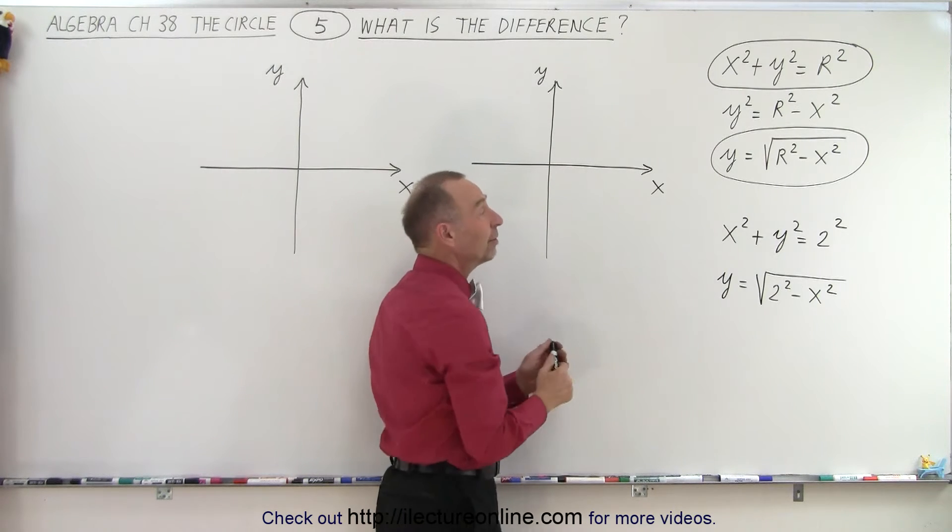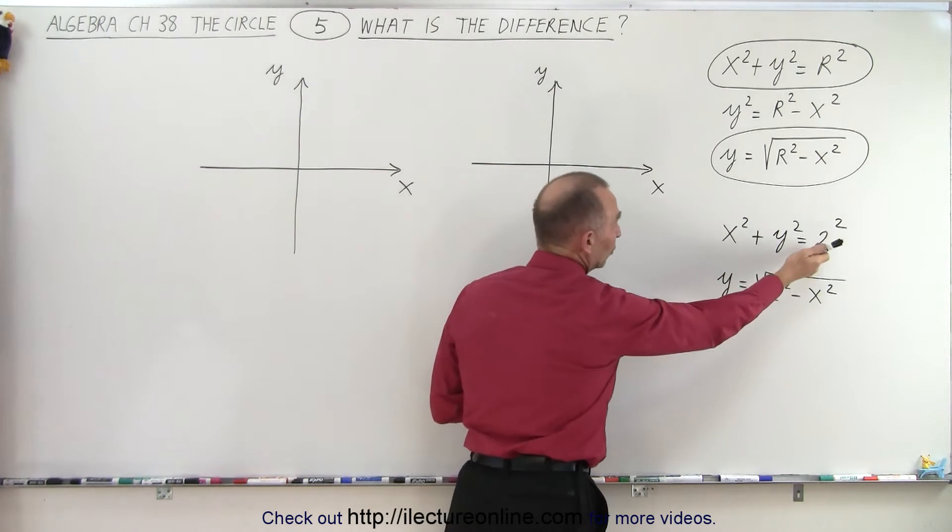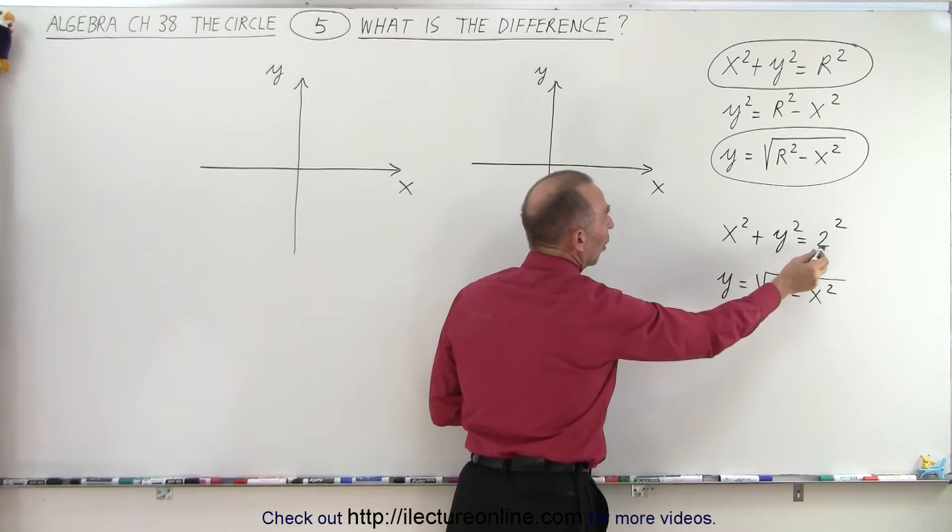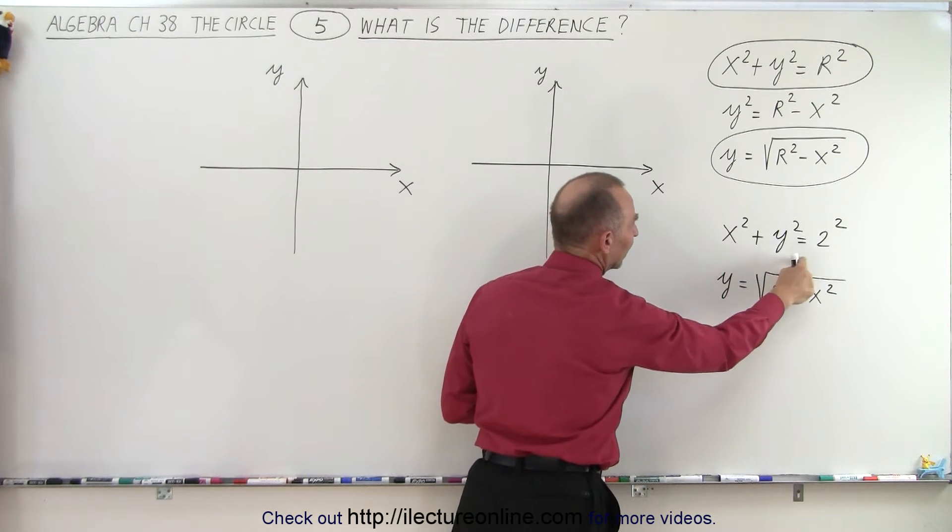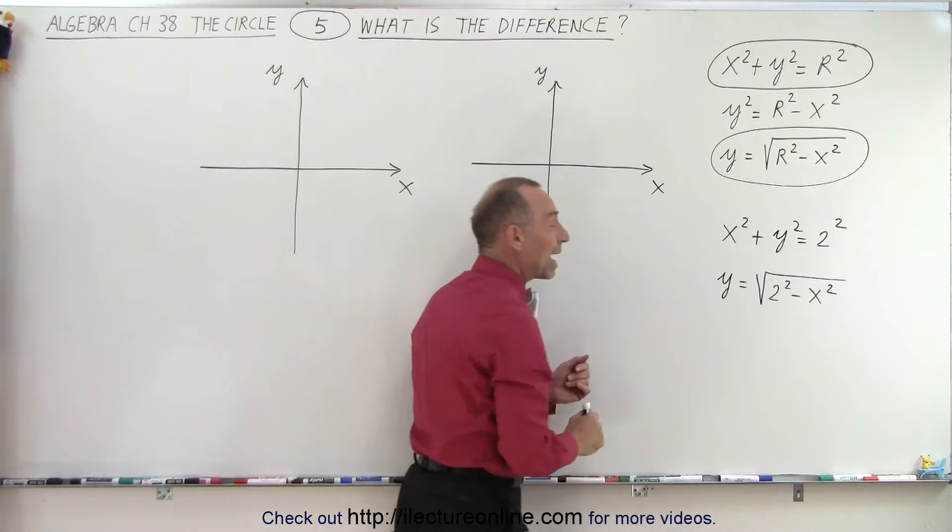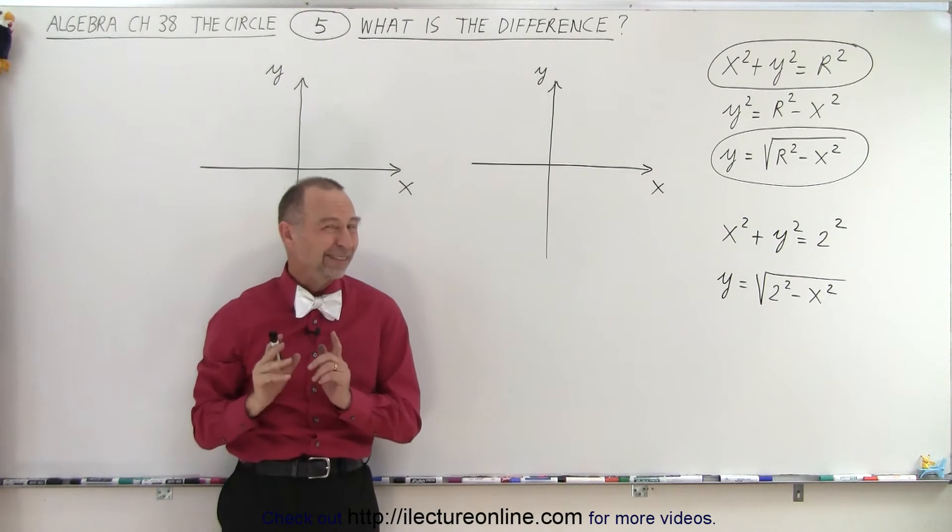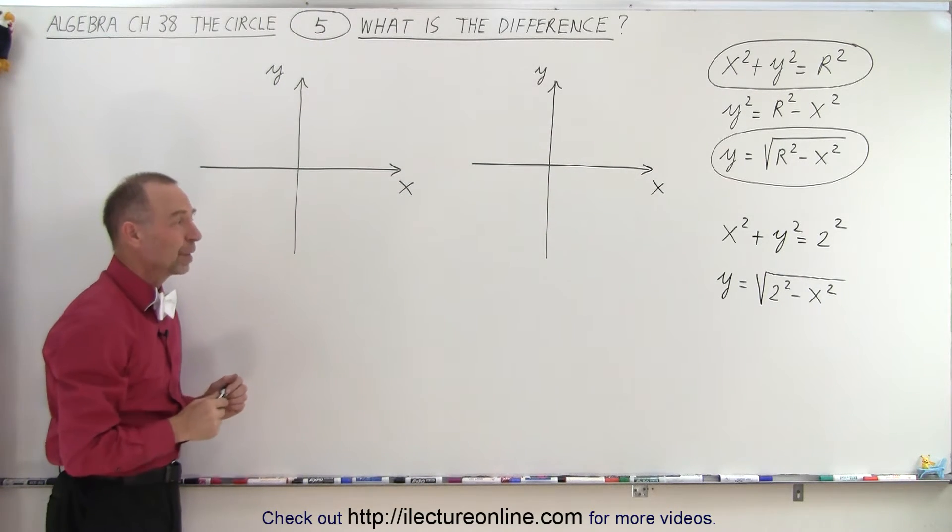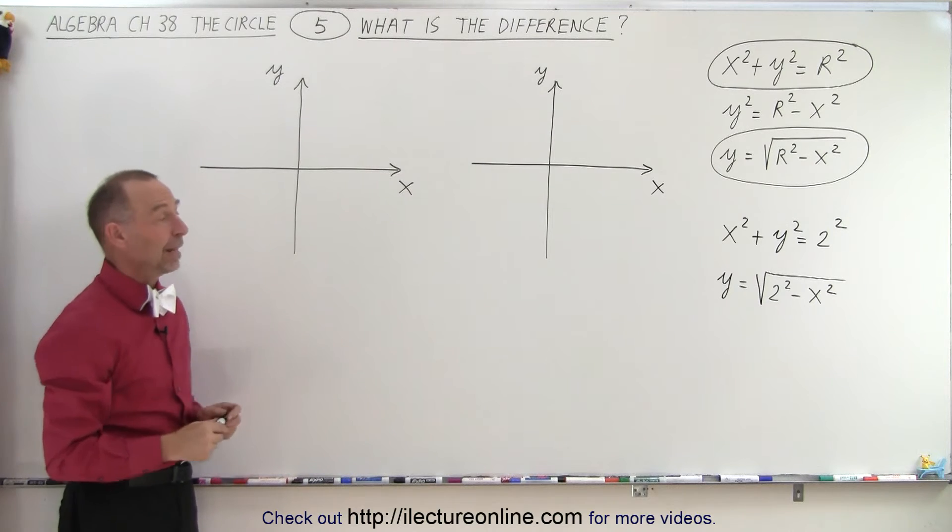Well, to illustrate it, we'll write an equation with an actual value for r. So r will be 2. And then again, we're going to write it like this and with the radical sign. And the question is, what is the difference between those two?